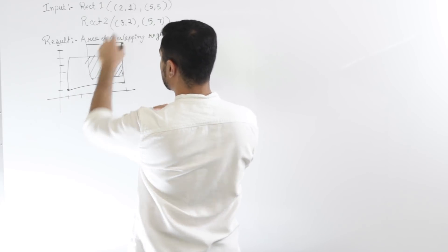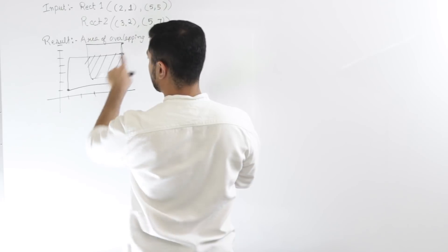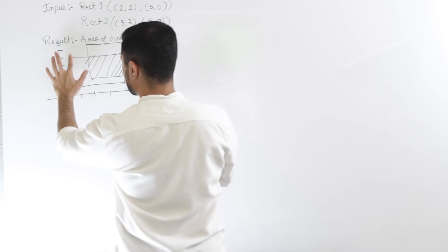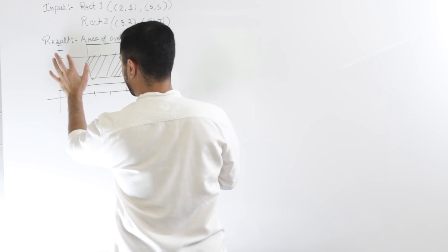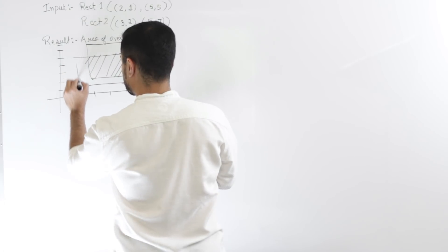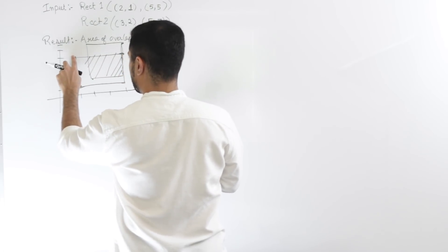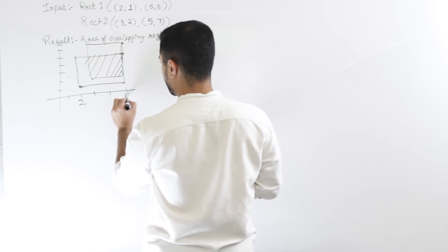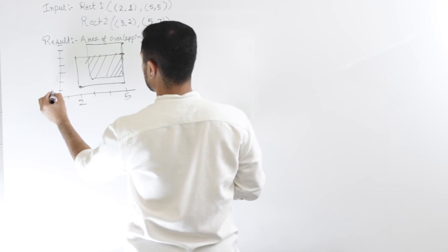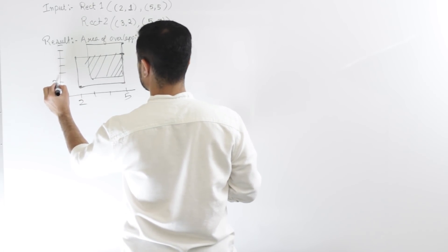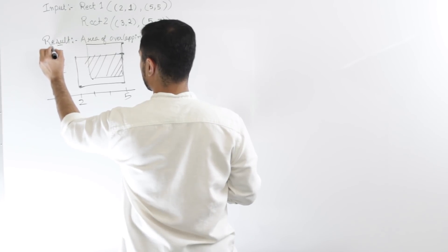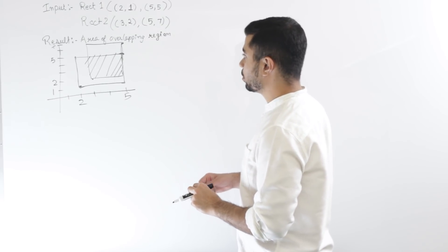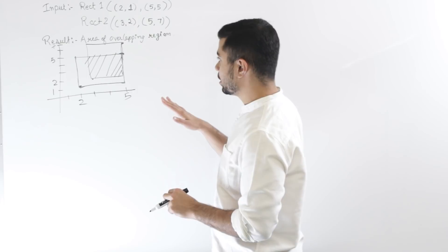Let me write out the points we're looking at. On the x-axis for the first rectangle I'm looking at 2 and 5; on the y-axis I'm looking at 1, 2, and 5 and 7.